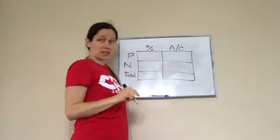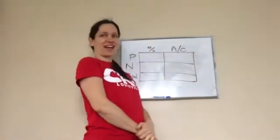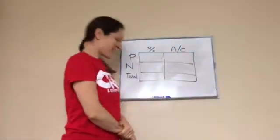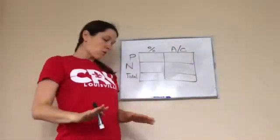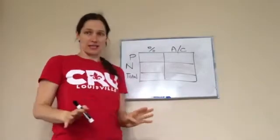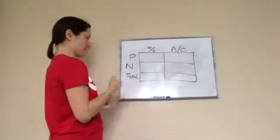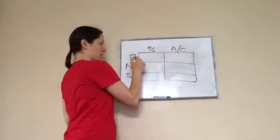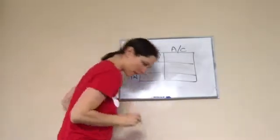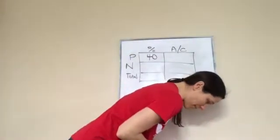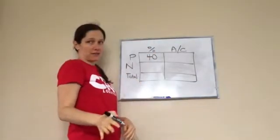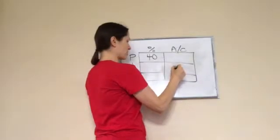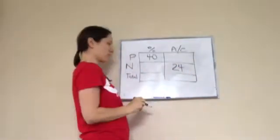Only 40% of the team members played in the game, so 40% in percent under players. If 24 team members did not play, 24 in actual count under not play. Then it says how many did play, so a question mark goes in actual count under players.